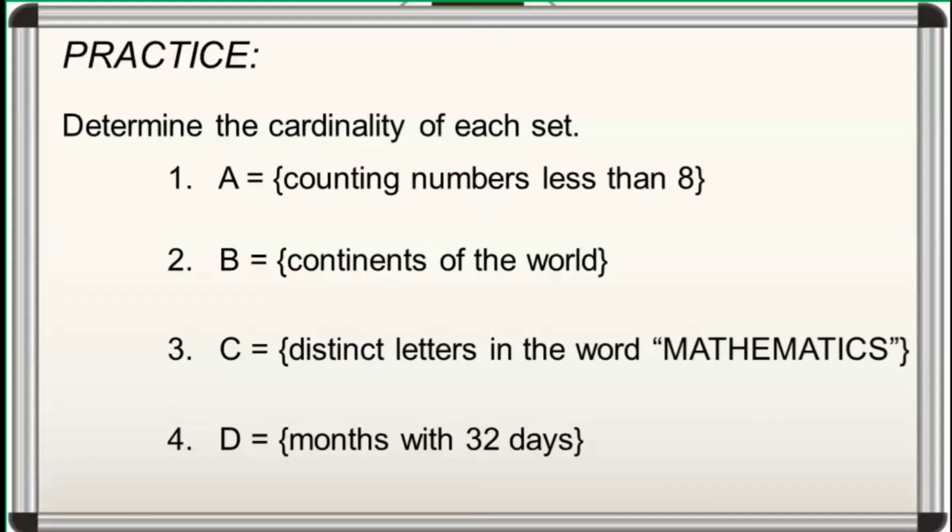For number 1, set A is the set of counting numbers less than 8. We have 1, 2, 3, 4, 5, 6, and 7. So, N of A is equal to 7.